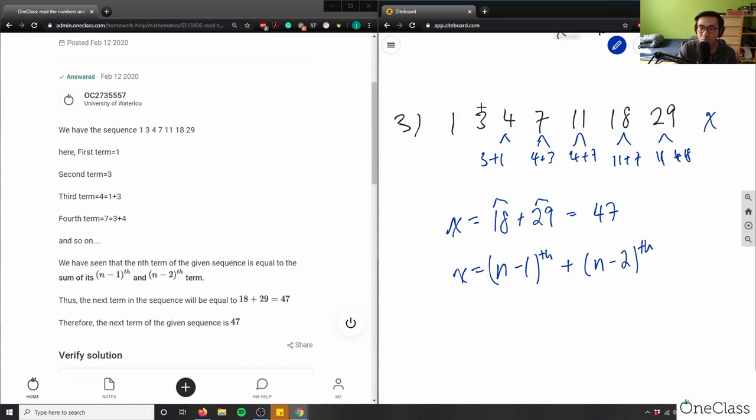So in this case, the nth term is 1, 2, 3, 4, 5, 6, 7, 8. So the 8th term equals the 7th term plus the 6th term. 8 minus 2 is 6, 8 minus 1 here is 7. So this here is the sum of these two numbers.